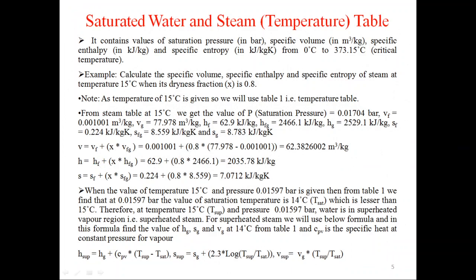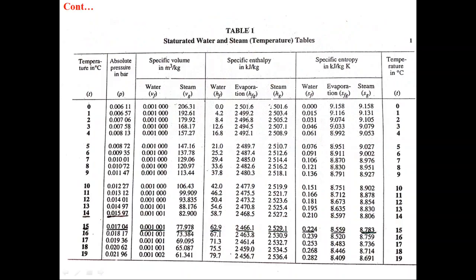We have taken an example in which we have to calculate the specific volume, specific enthalpy, and specific entropy of steam at a temperature of 15°C when its dryness fraction x is 0.8. Note: as the temperature of 15°C is given, we will use Table 1, the temperature table, because the first column is of temperature.